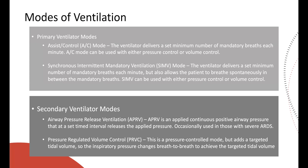Pressure regulated volume control, or PRVC, is a dual mode of ventilation that allows you to target a tidal volume and then uses pressure control ventilation to achieve that breath. Breath to breath, it looks at the tidal volume: if it didn't reach the target, it increases the pressure on the next breath; if it exceeded the target, it decreases the pressure on the next breath — to avoid overshooting or under-delivering.